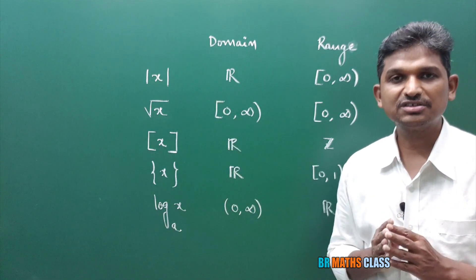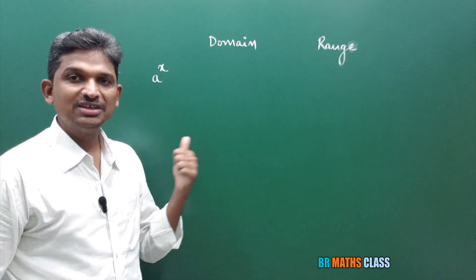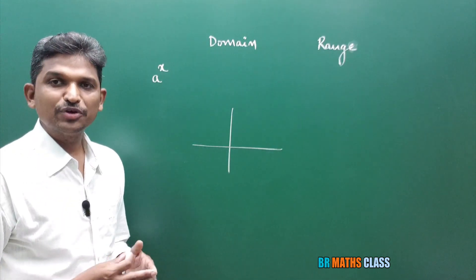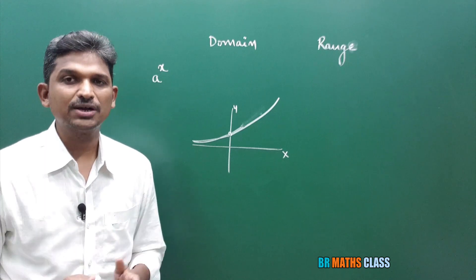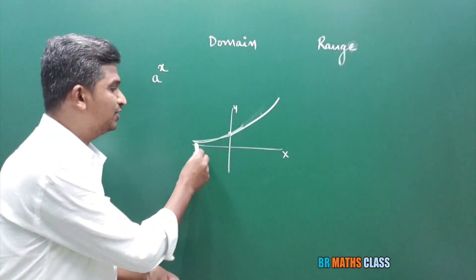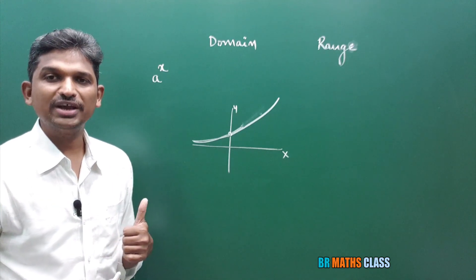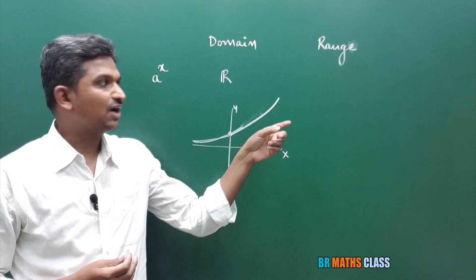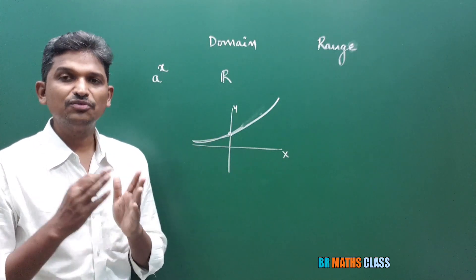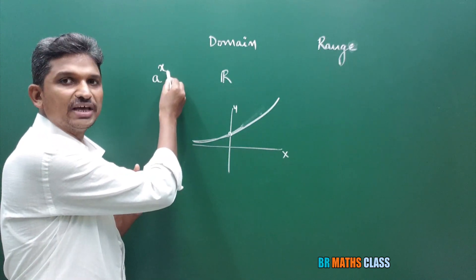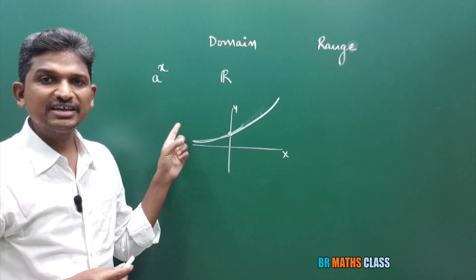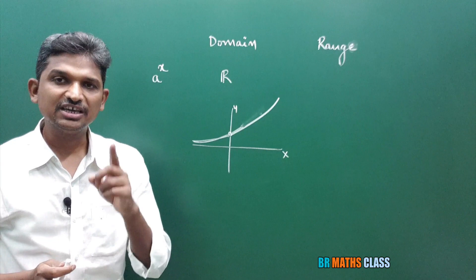Now, a^x — the exponential function, considering a > 1. The graph of a^x is defined for all real values of x, so its domain is all real numbers. From the graph, it exists in the first and second quadrant only (positive y-axis). Also, a^x never gives 0 for any real x. So the range of a^x is (0, ∞).